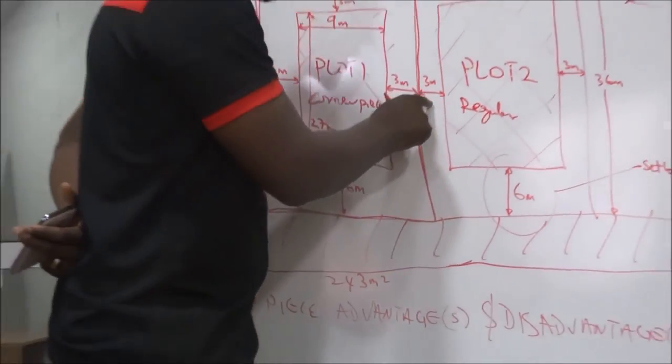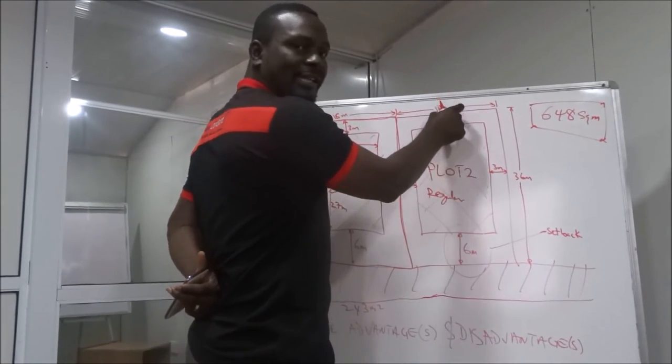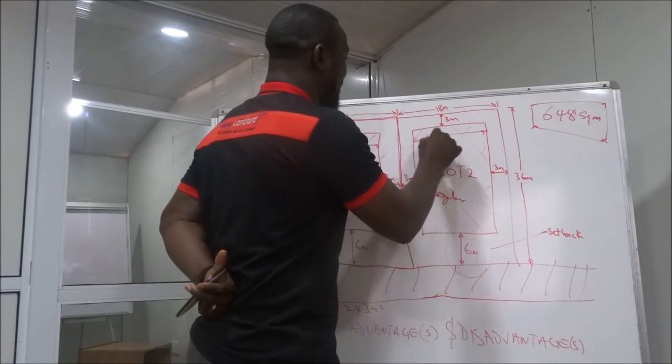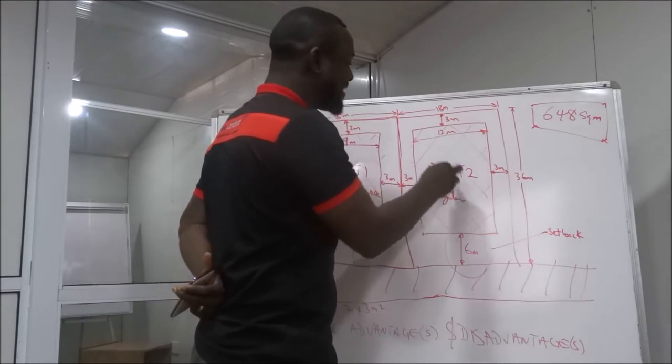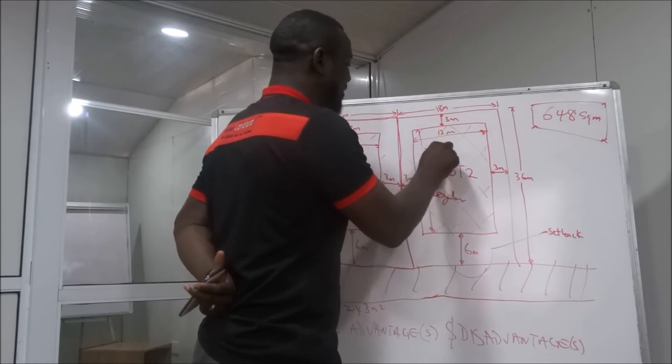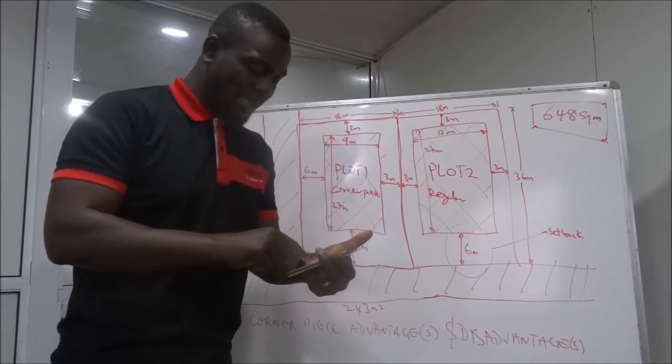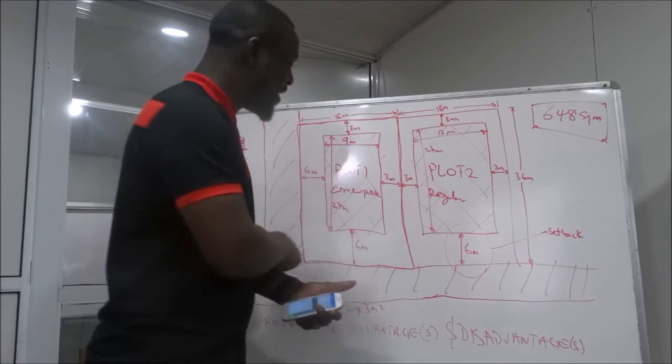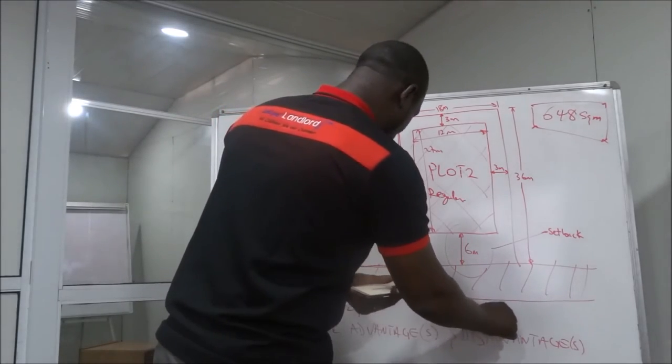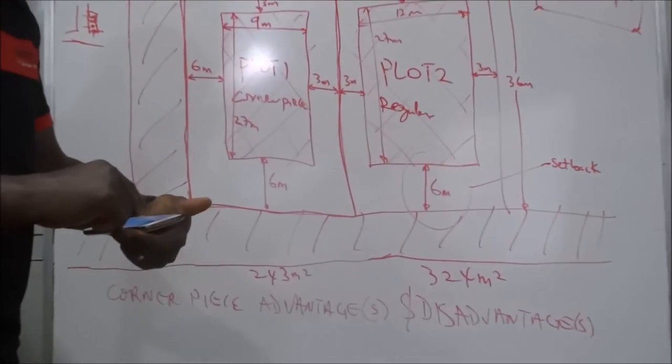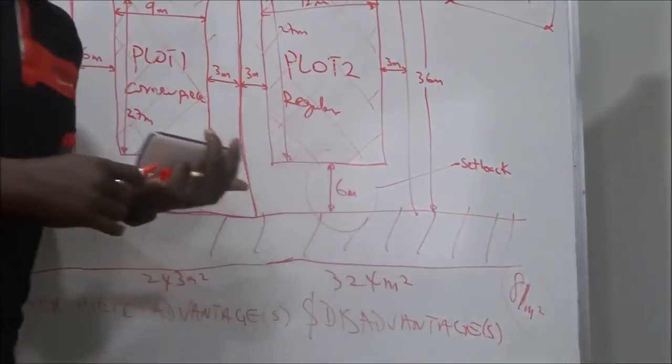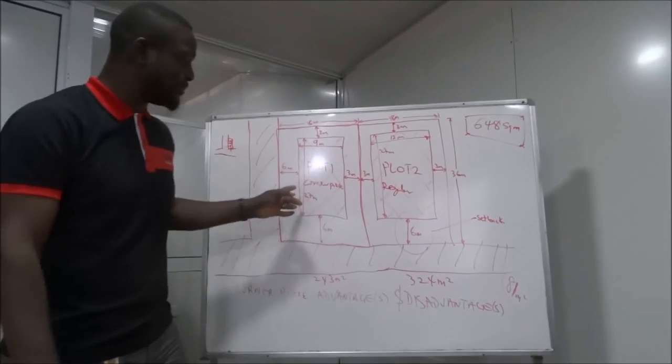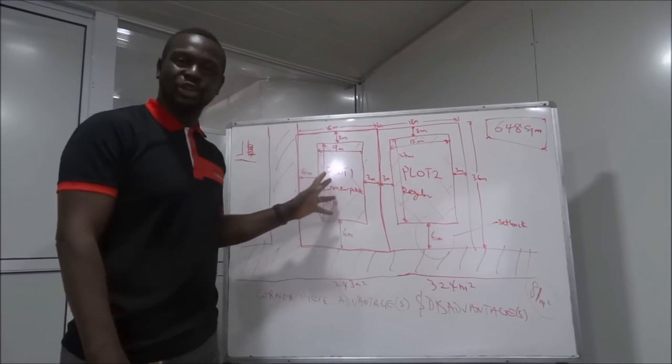So, it means that buildable area within this corner piece of regular plot size can be maximum of 243. Whereas, the regular plots, three meters, three meters, with 18, leaves you with 12 as width. And six and three, out of 36, leaves you with 27, as width. So, in this case, 27 times 12. Your buildable area here can actually be 324 square meters. That is like about 81 square meters difference. It's like 81 square meters more than what you can build on your corner piece.